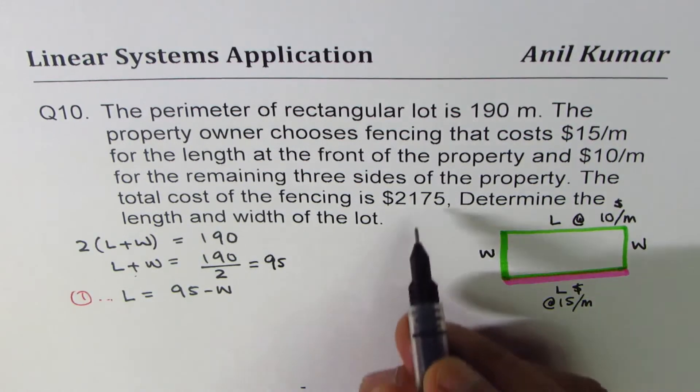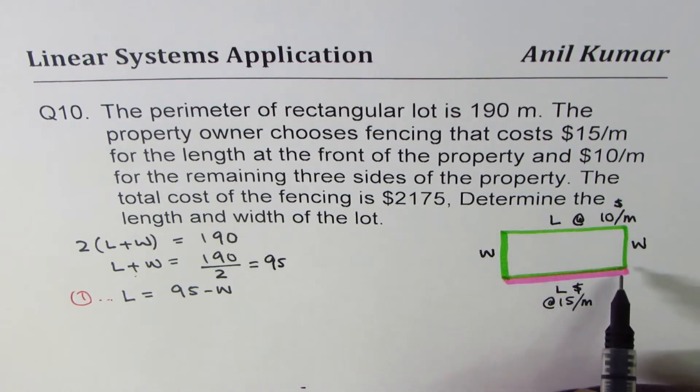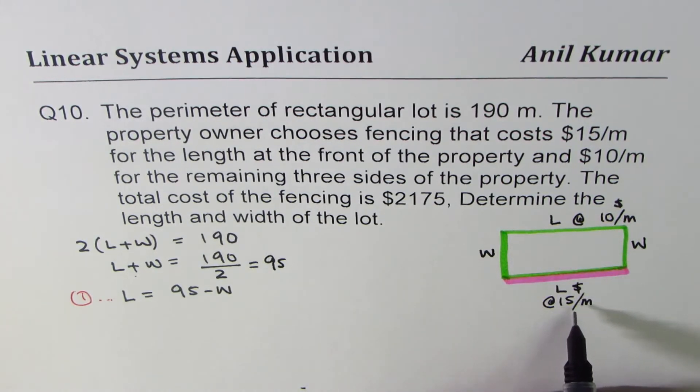Now the second equation we can get from the cost. Since cost of these three sides is 10, and the fourth one is 15,